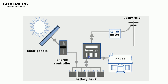If the output of the PV system is greater than the house consumption, the solar electricity can be used to charge the battery. And if the battery is fully charged and the output is still greater than the house consumption, then the solar electricity can be fed back into the grid.